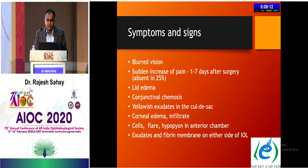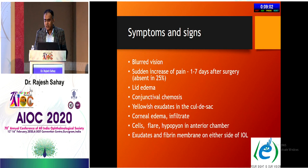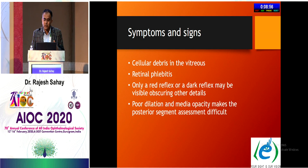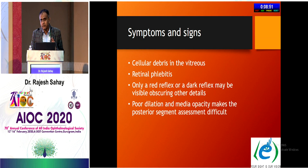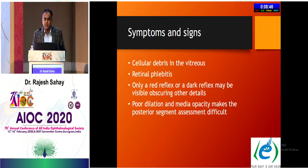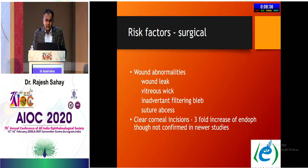Symptoms and signs include blurred vision, sudden increase in pain, occurring one to seven days after surgery in 25% of cases. Clinical findings include lid edema, conjunctival chemosis, yellowish exudates in the cul-de-sac, corneal edema, infiltrate, cells, flare, hypopyon in the anterior chamber, and exudates on either side of the IOL. Retinal phlebitis is the first sign of endophthalmitis, and only a red reflex or dark reflex may be visible in some cases.